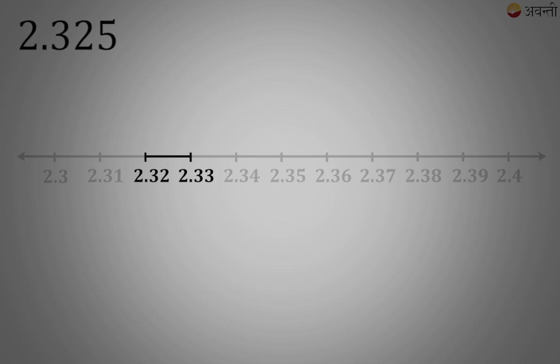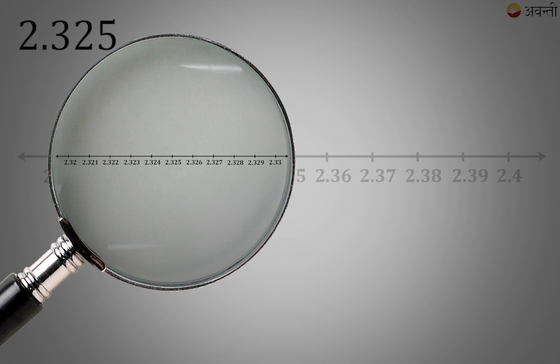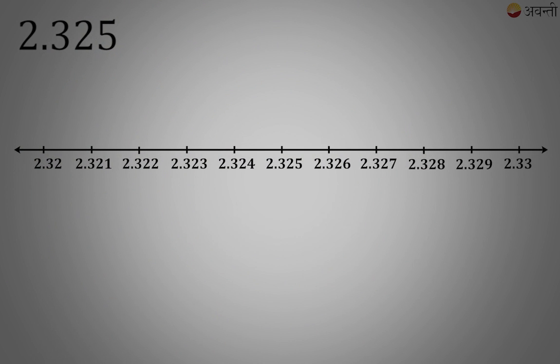If I magnify this area and divide it into 10 equal parts, each part would become one thousandth or 0.001. So the points over here would become 2.321, 2.322, 2.323 and so on.